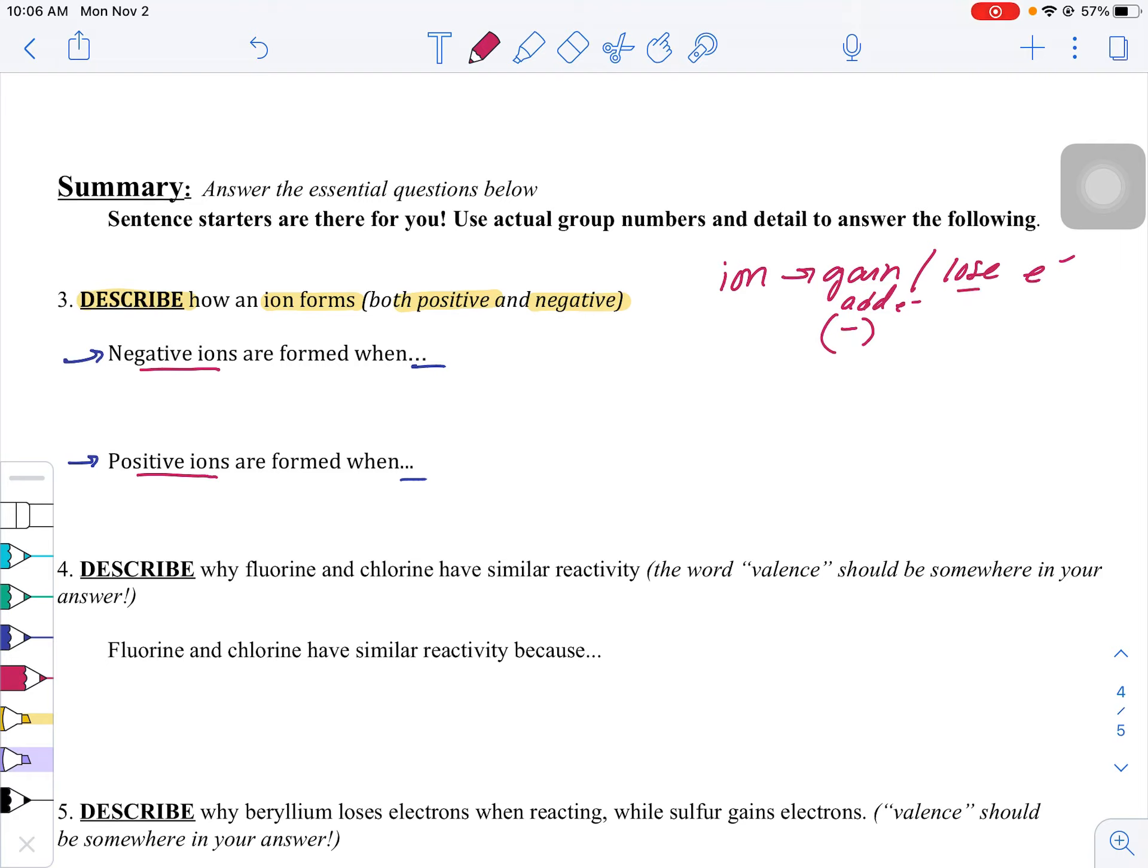For ions that are losing, that means they get rid of electrons. They give them away.